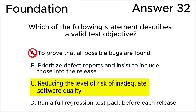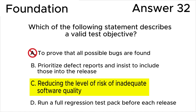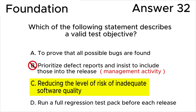Wrong answer A — to prove that all possible bugs are found — is totally wrong because this statement contradicts the testing principle of exhaustive testing being impossible. We can never prove that all possible bugs are found, and of course this statement doesn't relate to a test objective. Notice: avoid answers with the word 'prove'.